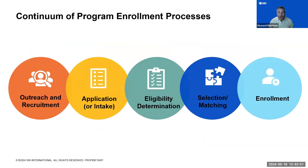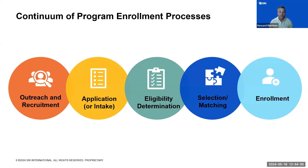Now that we know the why, let's talk about how you can coordinate eligibility and enrollment. There's a continuum of program enrollment processes that you can coordinate. These include outreach and recruitment, application or intake, eligibility determination, selection or matching, and enrollment. Some communities may choose to tackle only joint outreach and recruitment, while others may aim to create a common application for a certain set of programs. Still others may want to fully coordinate enrollment, meaning that selection of a program must occur and families may even be matched with a single best-fit provider.